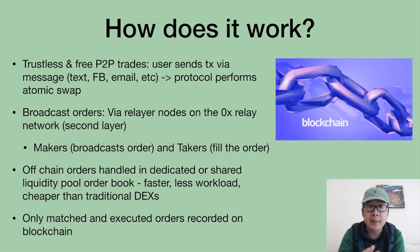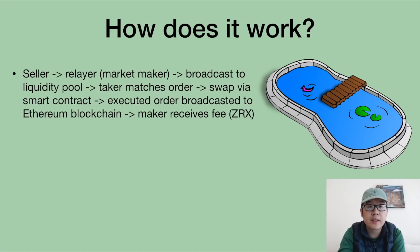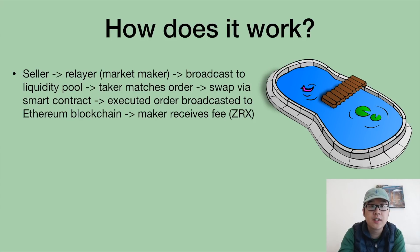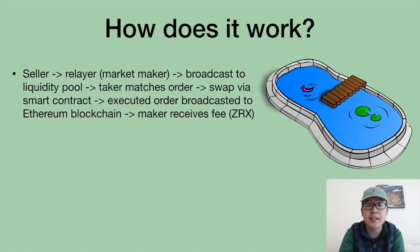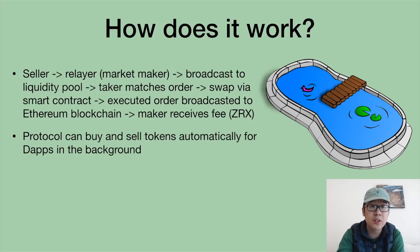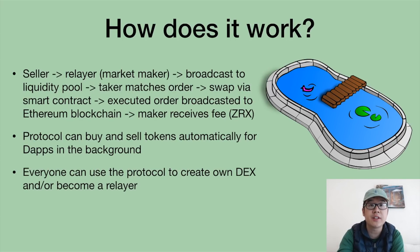Only orders that are successfully executed and matched are actually recorded on the blockchain — not every single order. End-to-end: the seller sends a trade to the relayer (also called the market maker), who broadcasts it to the liquidity pool. The taker matches the order — say, trading coin X for coin Y — and the swap is done via smart contract. The executed order is broadcast to the Ethereum blockchain, and then the maker receives a fee in ZRX tokens. The protocol can also buy and sell tokens automatically for dApps in the background, and anyone can use it to create their own DEX or become a relayer node.